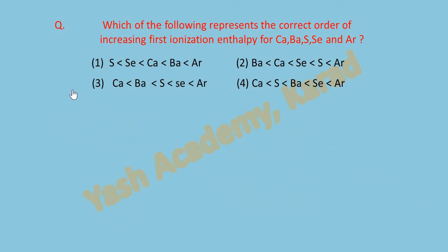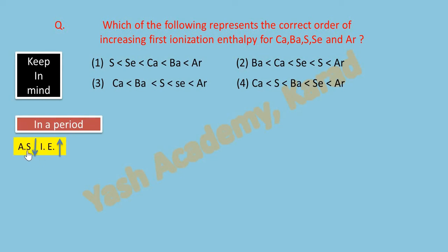Keep in mind while solving such type of questions: In a period, the atomic size goes on decreasing and ionization enthalpy goes on increasing. Down a group, atomic size goes on increasing and ionization enthalpy goes on decreasing.